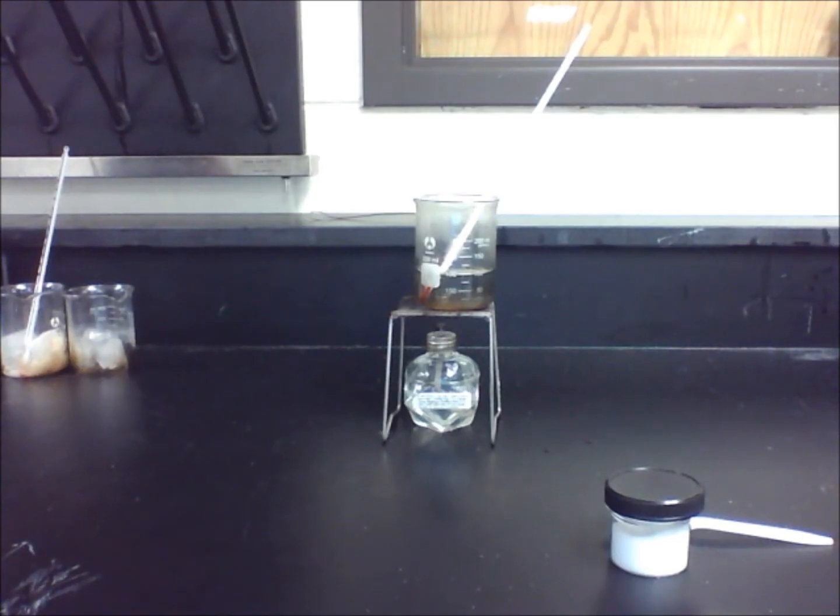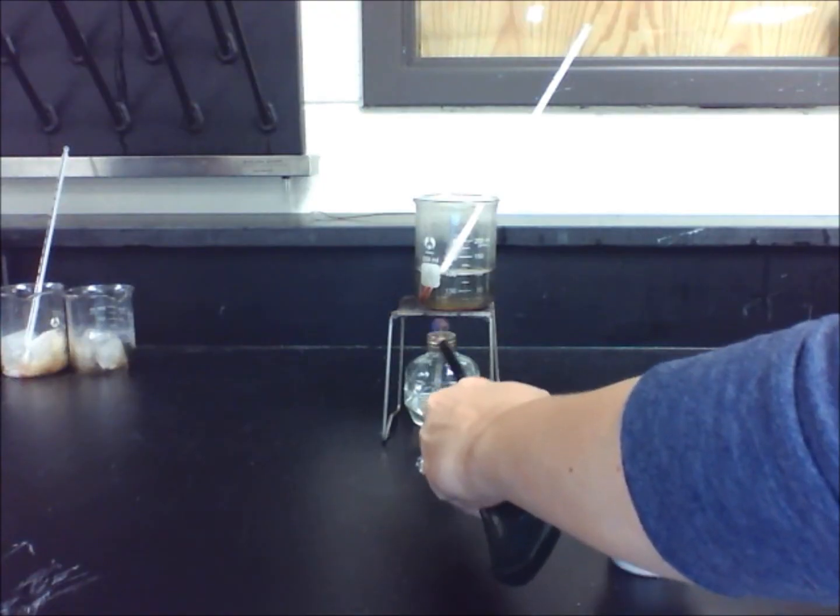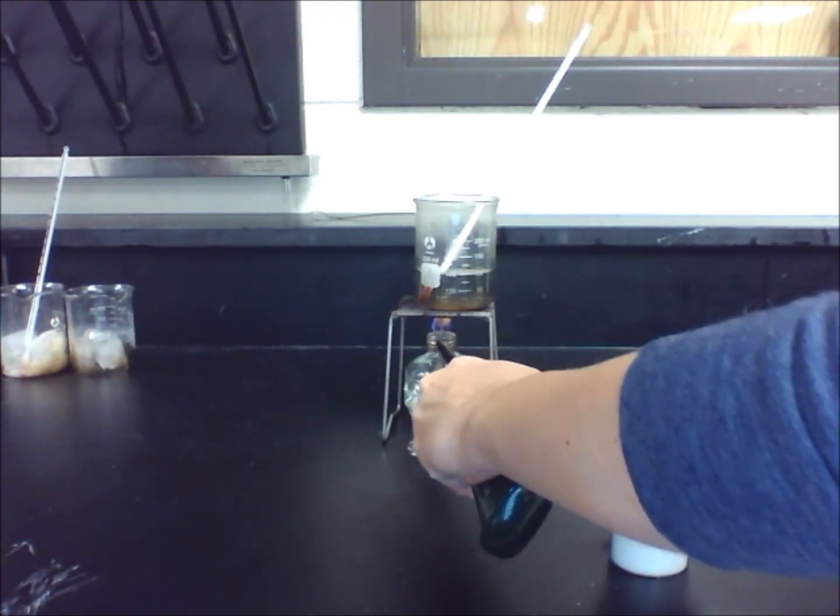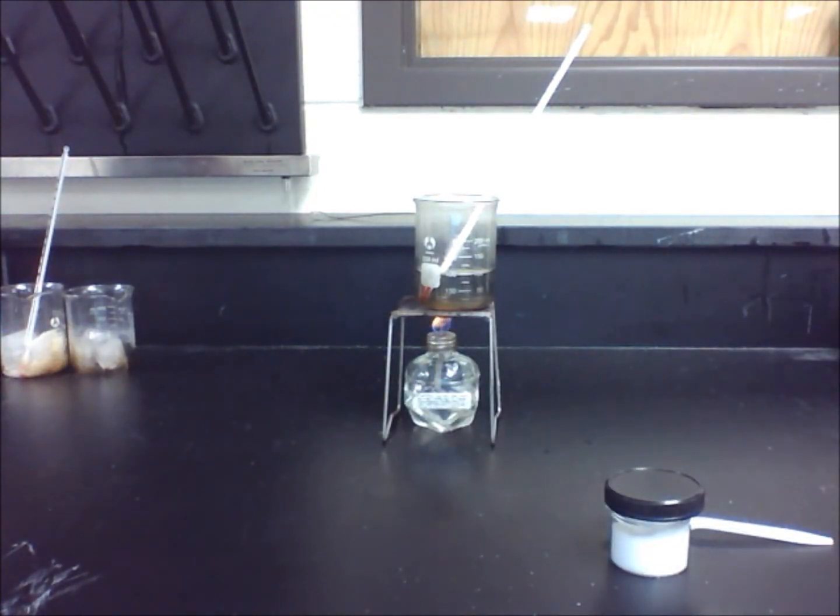First, add 100 milliliters of hot water into a beaker. Place a thermometer in the beaker, and then place the beaker on a burner stand and heat the water until it boils.